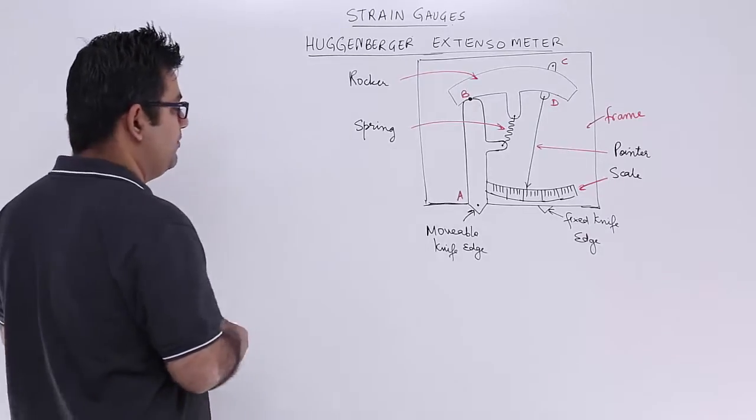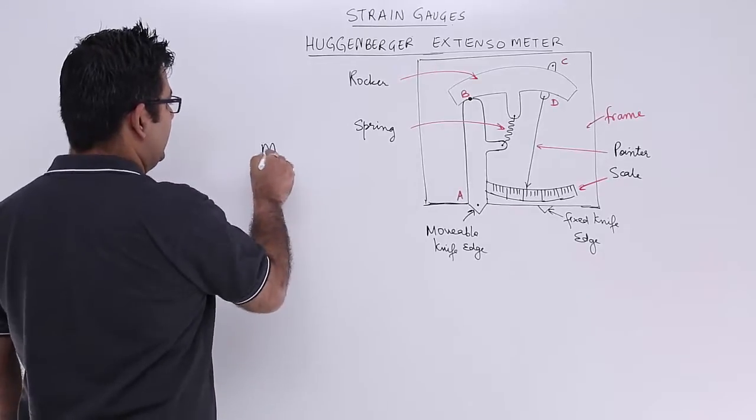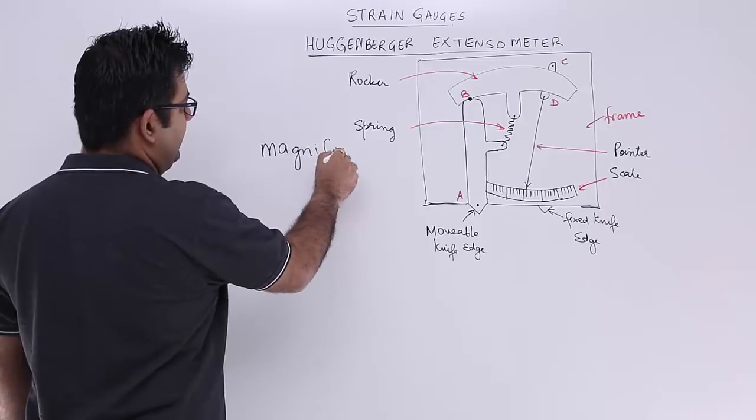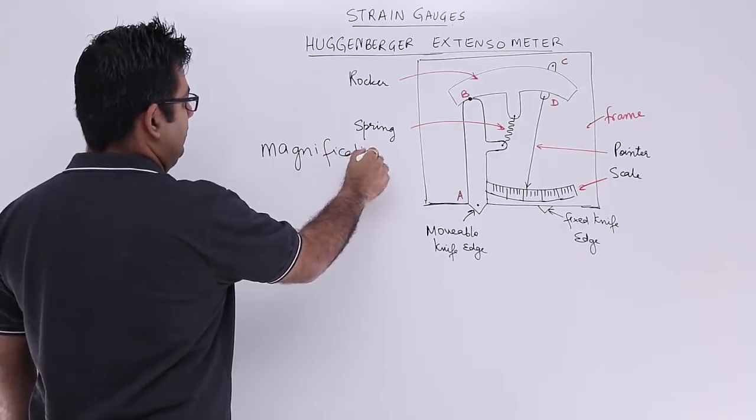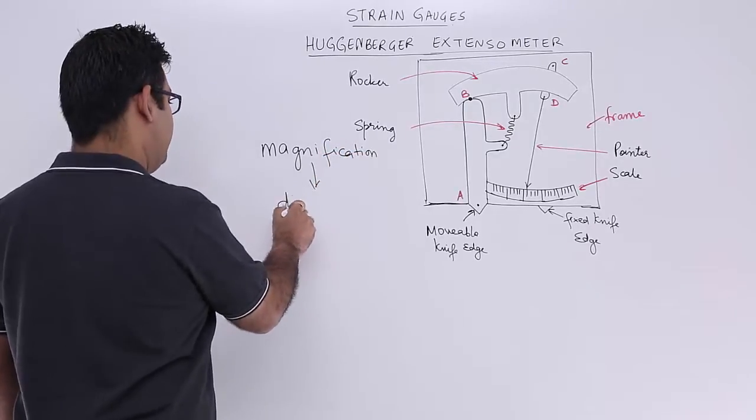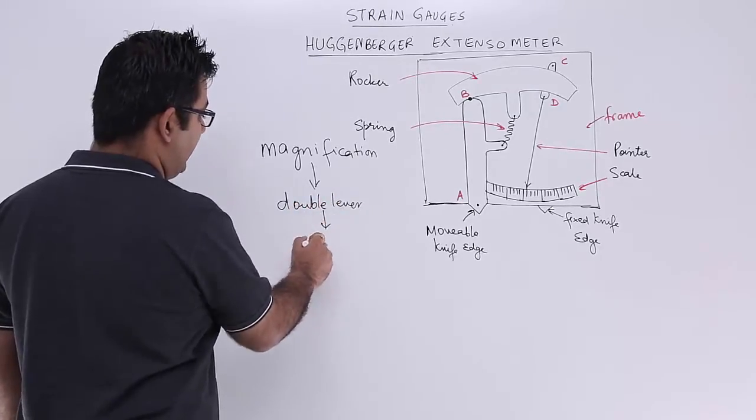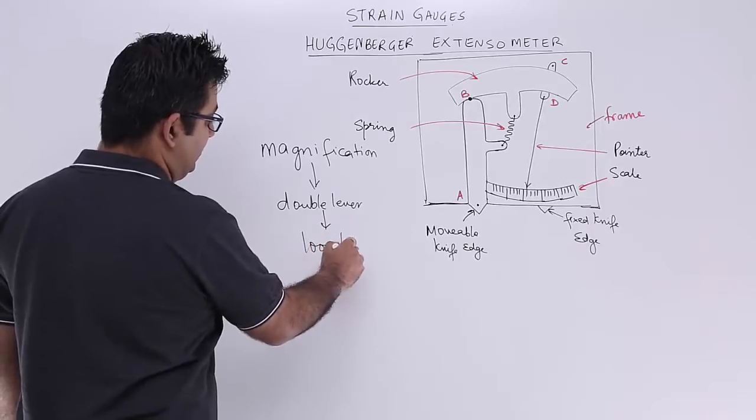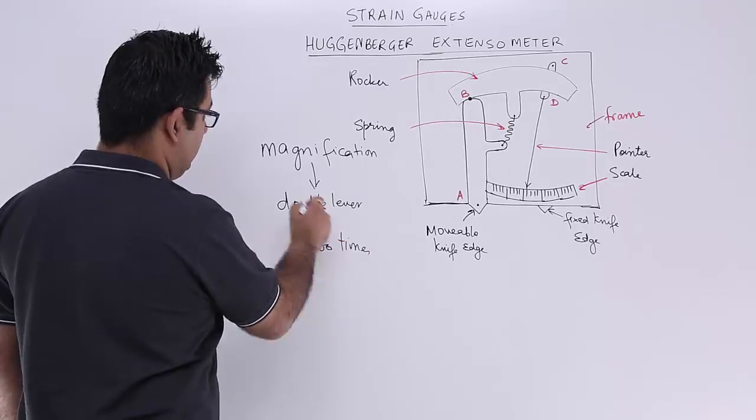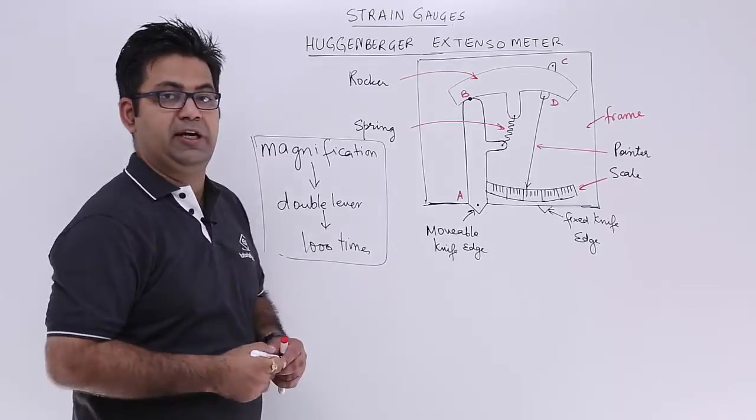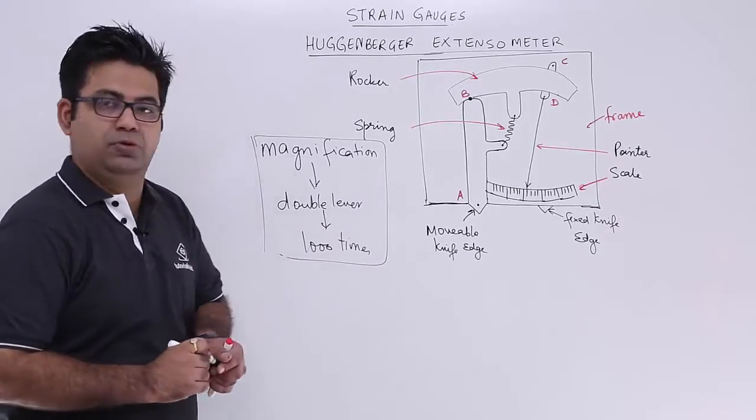So in this the magnification is basically brought about by using a double lever mechanism. We make use of a double lever mechanism and the magnification is about 1000 times. So this is how good it is as compared to the previous two extensometers.